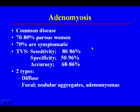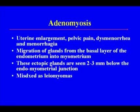Adenomyosis is another common cause of uterine pain, seen in 70 to 80% of parous women, with 70% symptomatic. Transvaginal ultrasound has sensitivity of 80 to 86%, specificity of 50 to 96%, and accuracy of 68 to 86%. Adenomyosis presents as diffuse or focal types — the focal is nodular and sometimes referred to as an adenomyoma. Patients present with uterine enlargement, pelvic pain, dysmenorrhea, and menorrhagia. It is due to migration of glands from the basal layer of the endometrium into the myometrium, often misdiagnosed as leiomyomas.